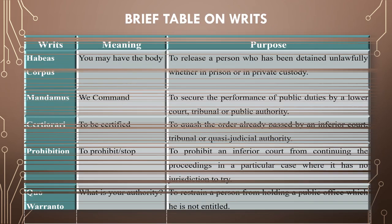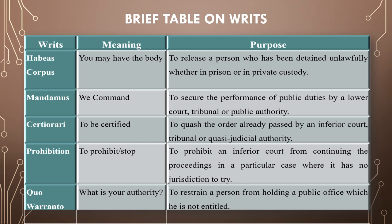In summary, the five writs are: habeas corpus, meaning 'you may have the body,' to release a person detained unlawfully; mandamus, meaning 'we command,' to secure performance of public duties by a lower court, tribunal, or public authority; certiorari, meaning 'to be certified,' to quash an order passed by an inferior court, tribunal, or quasi-judicial authority; prohibition, meaning to prohibit or stop, to prohibit an inferior court from continuing proceedings where it has no jurisdiction; and quo warranto, meaning 'what is your authority,' to restrain a person from holding a public office to which he is not entitled.